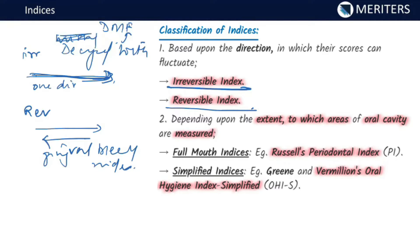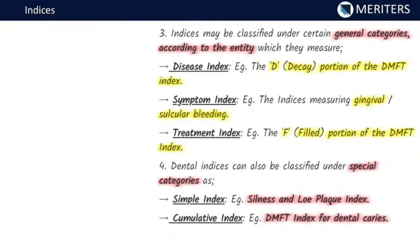Full mouth indices record measurements of all existing teeth present, while simplified indices measure only a specific number of teeth — called index teeth — to make the measurements. An example of a full mouth index is Russell's Periodontal Index, whereas an example of a simplified index is the Oral Hygiene Index Simplified by Green and Vermillion.